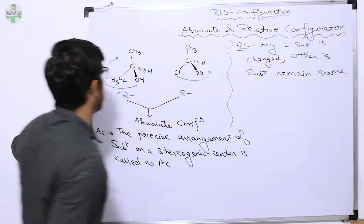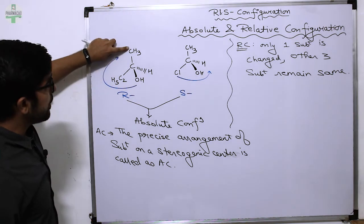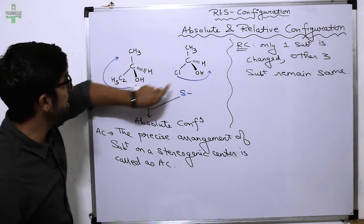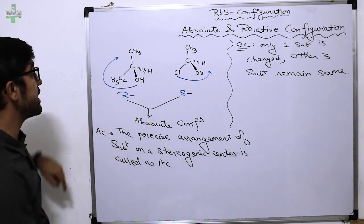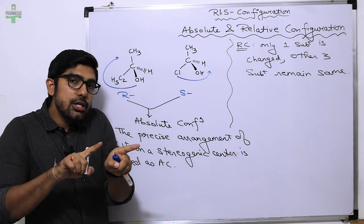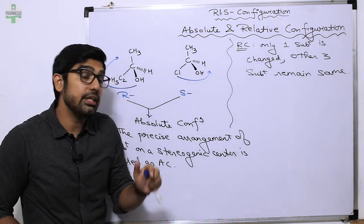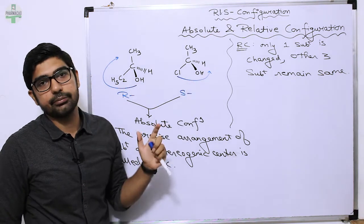What does this mean? Look at these molecules. On this carbon there is CH3, H, and OH. What is changed here? Only C2H5 and Cl. On one bond the molecules or substituents are different, but the other three are the same. So their relative configuration is the same.